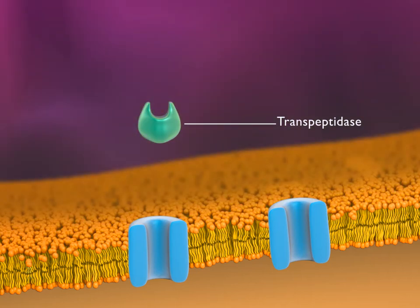The substrate of this enzyme is peptidoglycan, which the enzyme cross-links, producing a product that strengthens the bacterial cell wall.